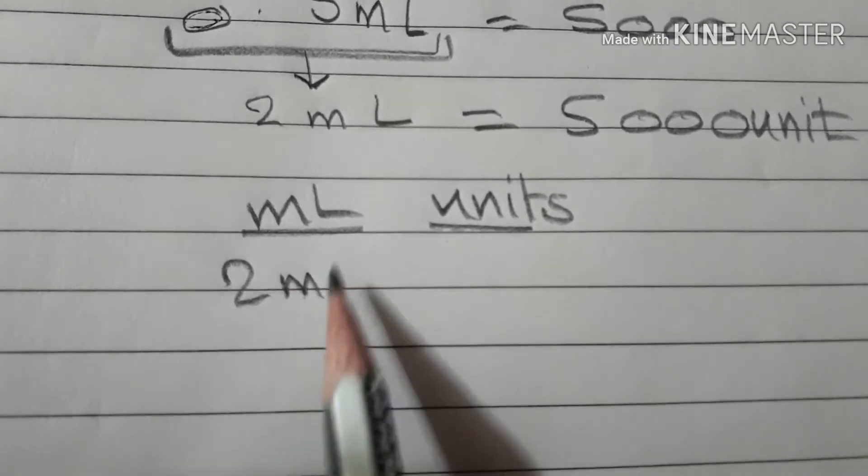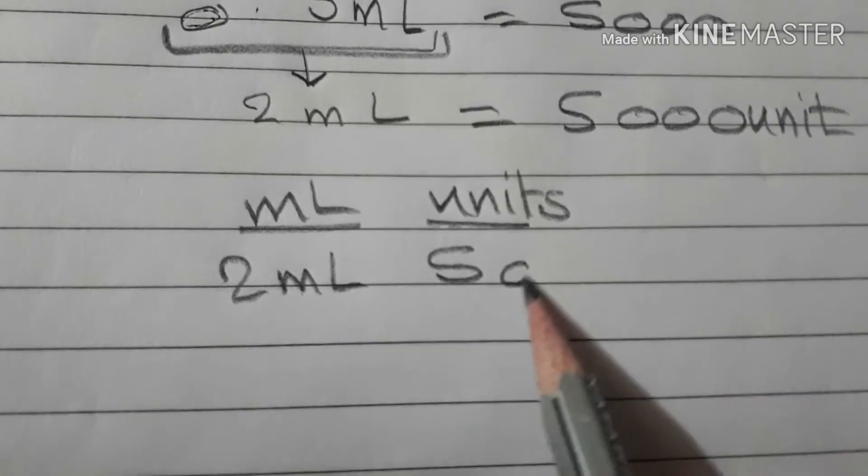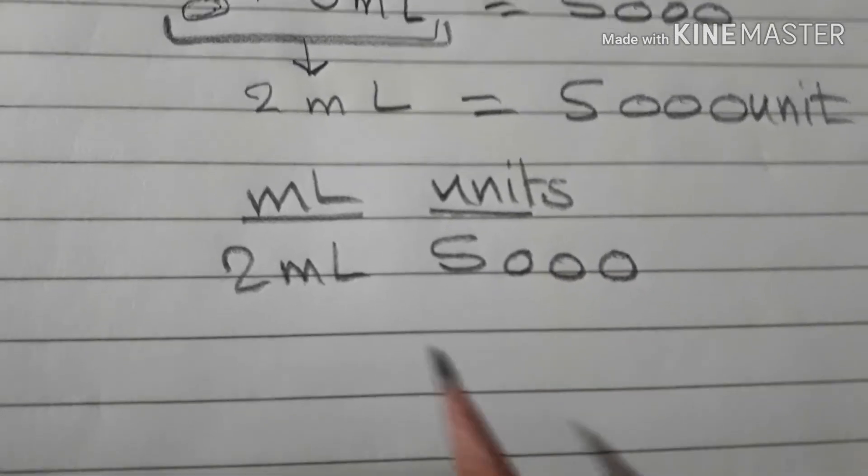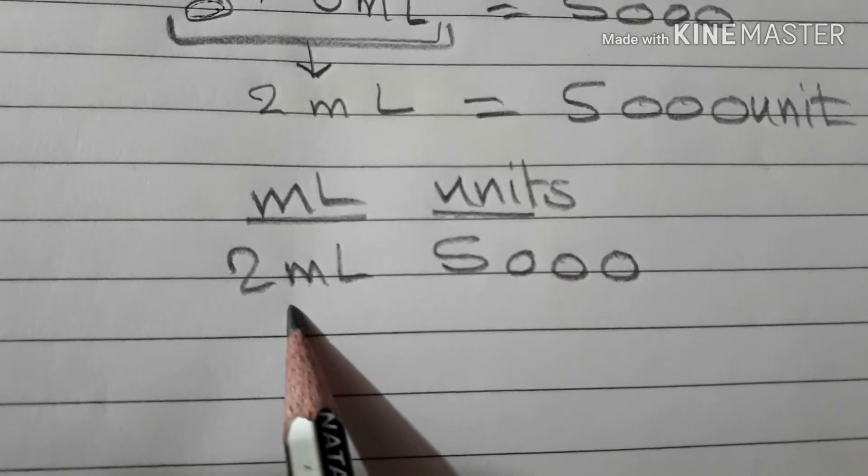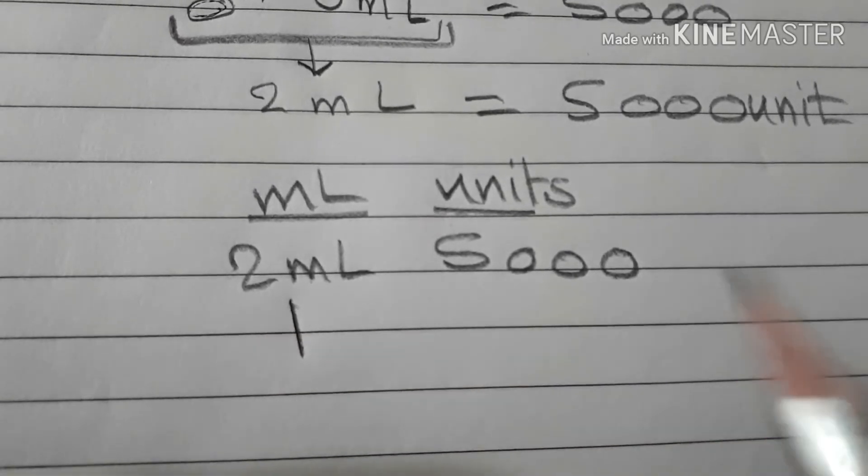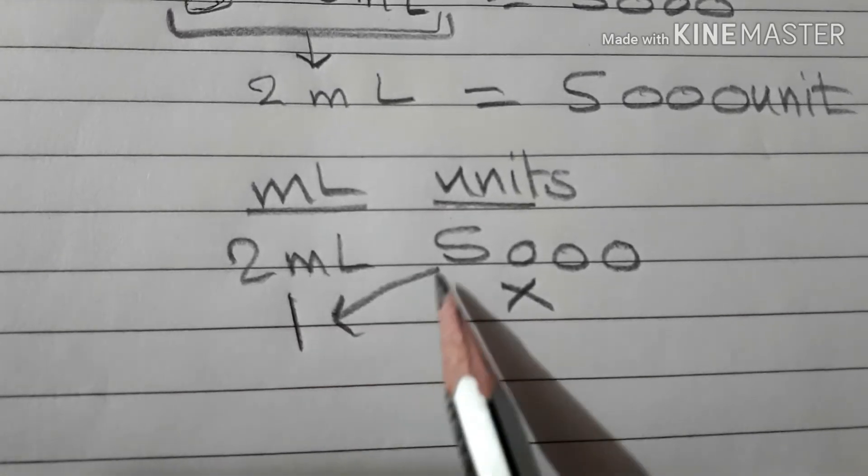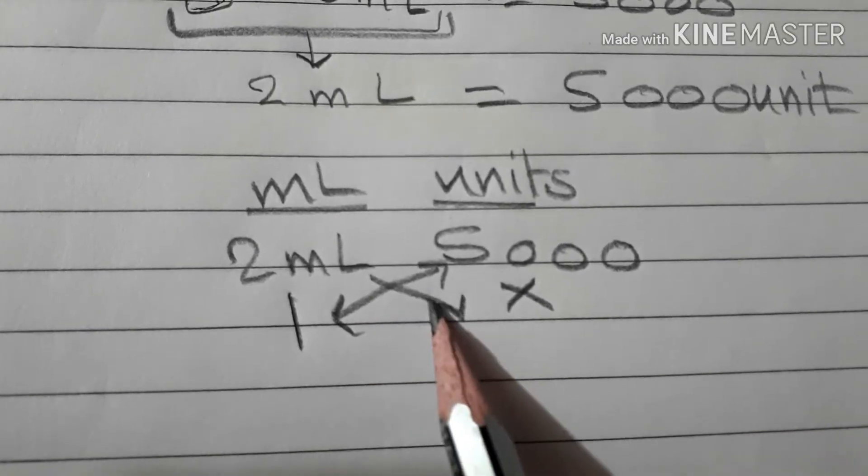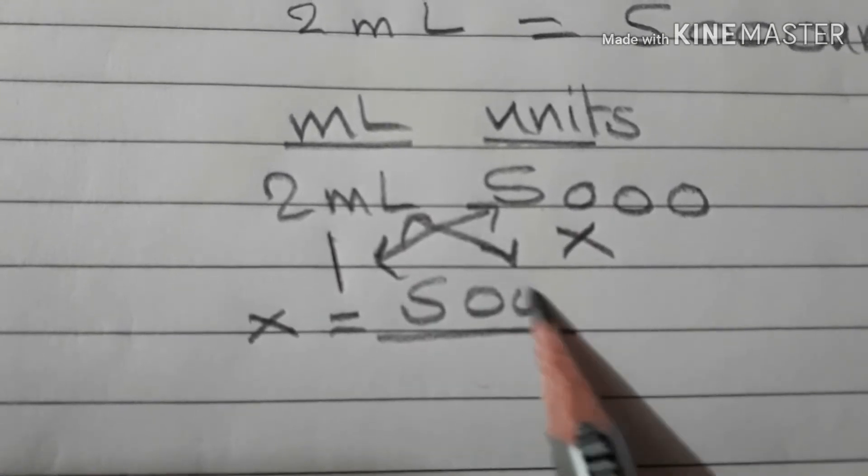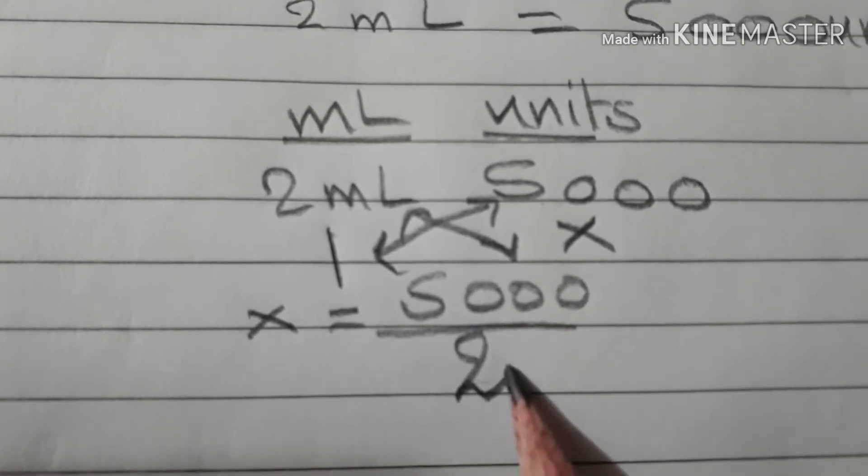2 milliliters equals 5000 units. 1 milliliter equals X. X equals 5000 divided by 2.